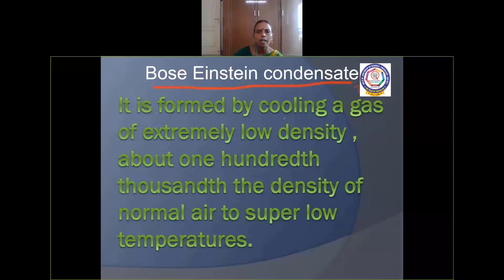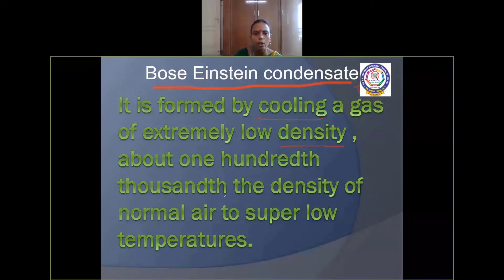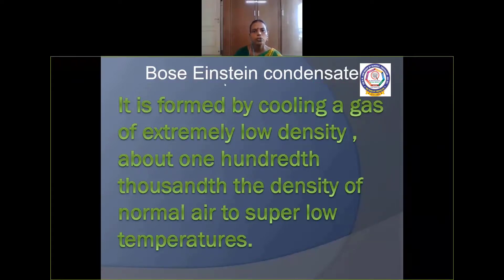Bose-Einstein condensate is formed by cooling a gas of extremely low density — about 1/100,000 the density of normal air — to super low temperatures.